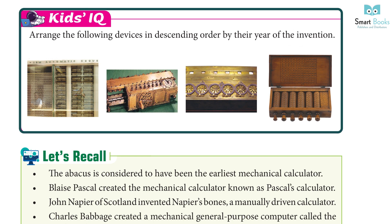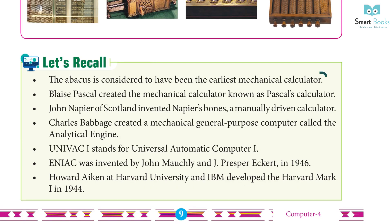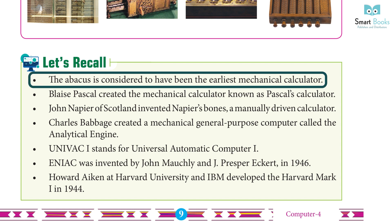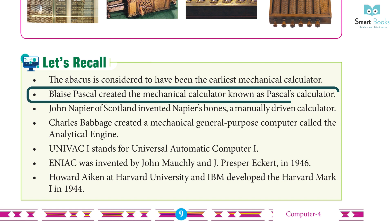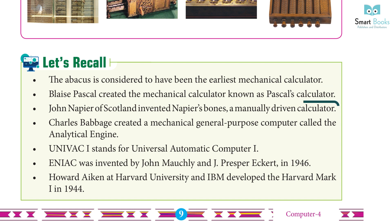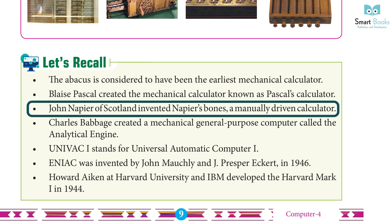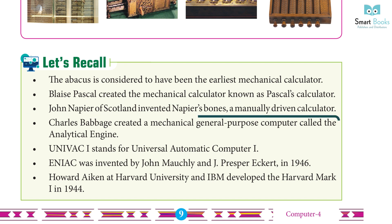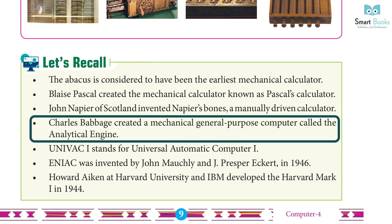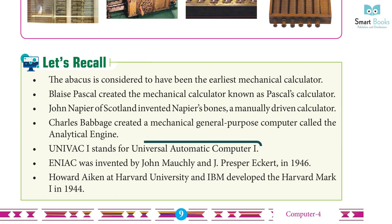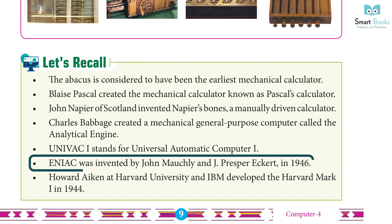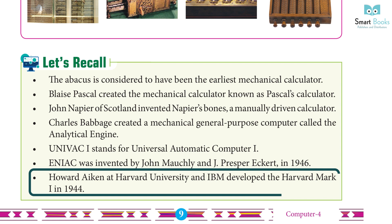Get Set Go! Arrange the following devices in descending order by their year of invention: The Abacus is considered the earliest mechanical calculator. Blaise Pascal created the mechanical calculator known as Pascal's Calculator. John Napier of Scotland invented Napier's Bone. Charles Babbage created the Analytical Engine. UNIVAC I stands for Universal Automatic Computer I. ENIAC was invented by John Mauchly and J. Presper Eckert in 1946. Harvard Mark I was developed by Howard Aiken and IBM in 1944.